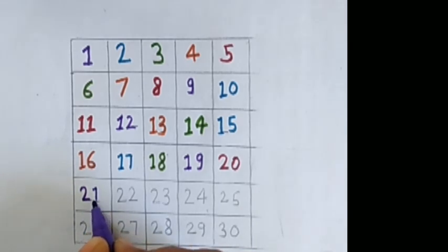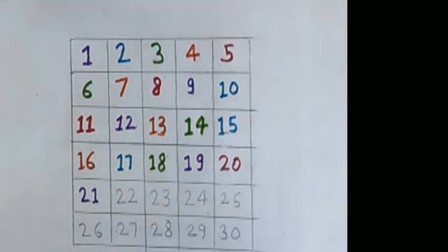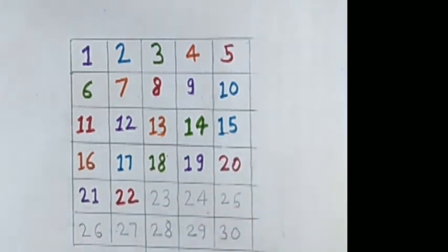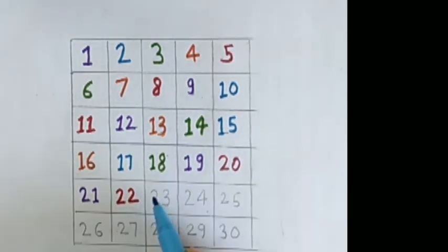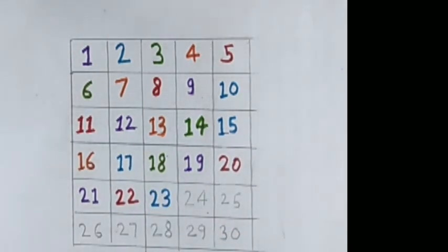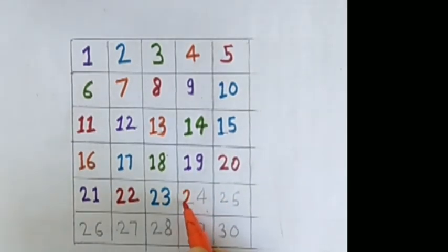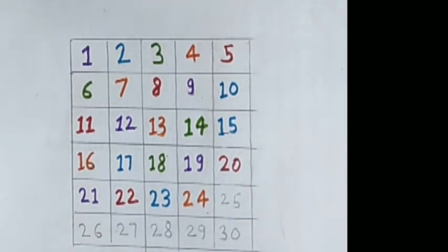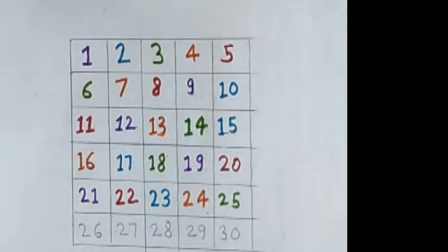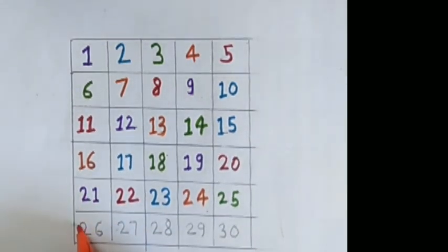21, 2, 1, 21, purple color. 2, 2, 22, red color. 2, 3, 23, sky blue color. 2, 4, 24, orange color. 2, 5, 25, green color. What comes after 25?